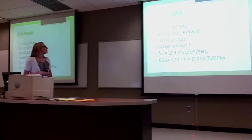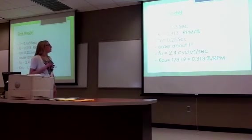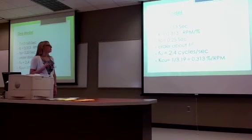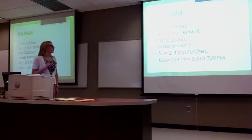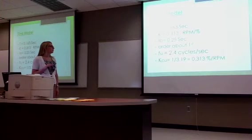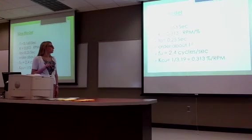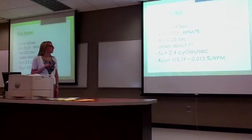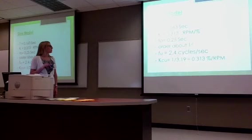Here is the data found from the sine model. The tau is 0.163 seconds, the gain K is 0.313 RPM per percent, the dead time is 0.25 seconds, the order is about 1 (first order), and the FU is 2.4 cycles per second. The KCU is 1 over 2.19, which is the physical value.